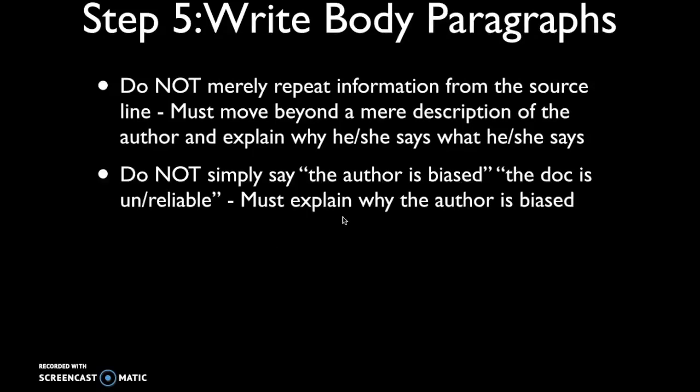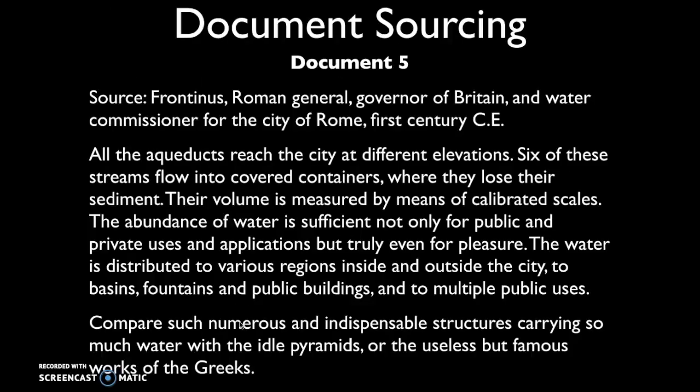Don't simply say 'the author is biased' — every document and historical source has some bias to it. And don't just say the document is reliable or unreliable. You have to explain why the author is biased. You can also quote a short snippet that highlights some of those biases, but don't go into length or use long quotes in this section of the body paragraphs either.